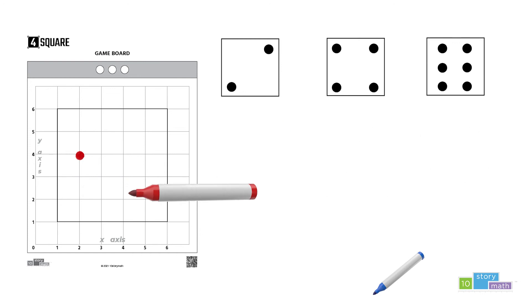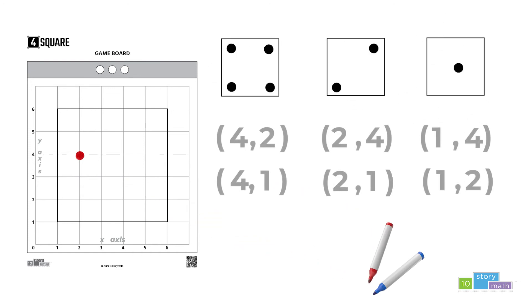And now it's the blue team's turn. They will start by rolling the dice and then figuring out which ordered pair to use. Because the red team already put a dot at the point (2,4), the blue team cannot use that coordinate.